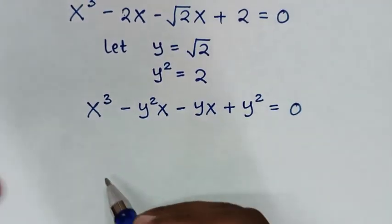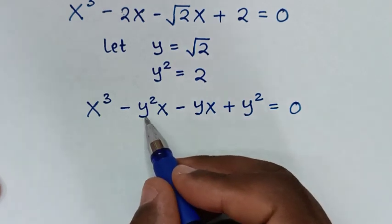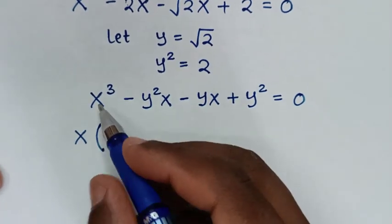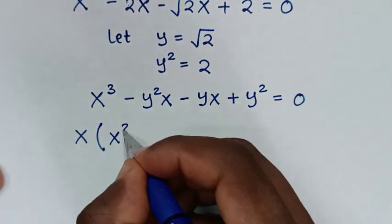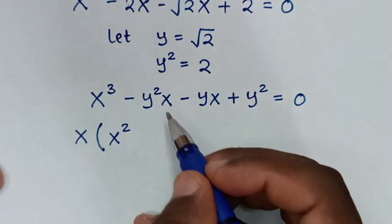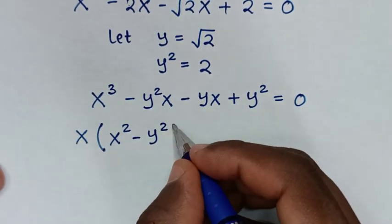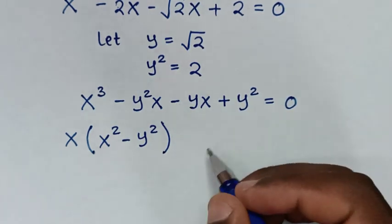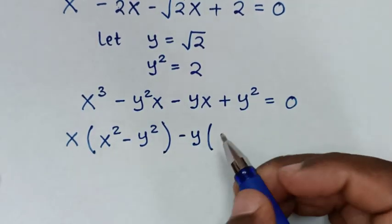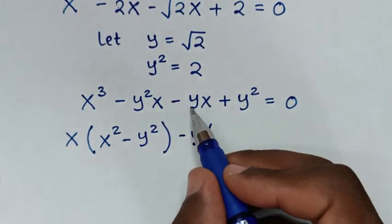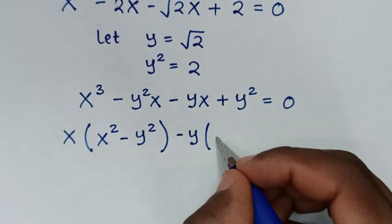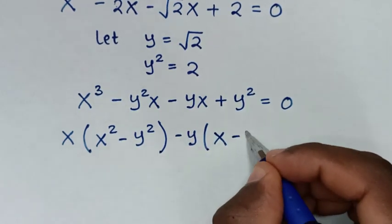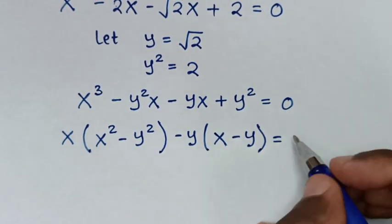In the next step, we factor by grouping. From x³ minus y²x, x is common, so we factor out x to get x(x² minus y²). Then from the remaining terms, we factor out negative y to get negative y(x minus y). So we have x(x² minus y²) minus y(x minus y) equals 0.